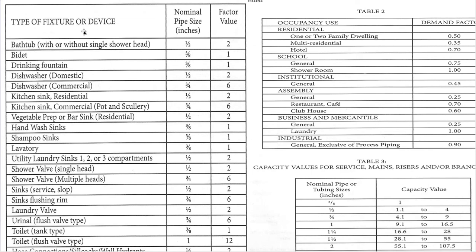Right here you have the fixtures or devices, their nominal pipe size in inches, and their coinciding factor values. So everything that's half-inch will be a factor value of two. Everything that's three-eighths will be a factor value of one, three-quarter is six.